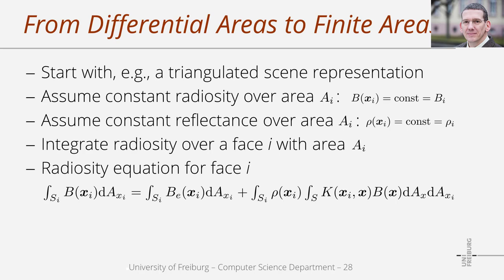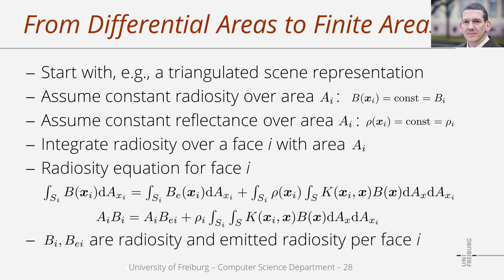Using the fact that the radiosity and reflectance are constant within one patch, the integral on the left-hand side simplifies to the product of radiosity bi of patch i times area ai. The same holds for the emission term on the right-hand side, where bi is the emitted radiosity at patch i. The reflected radiosity integral is also over patch i, and since reflectance rho is constant within patch i, it can be pulled in front of the integral.